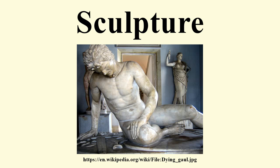Casting is a group of manufacturing processes by which a liquid material is poured into a mould, which contains a hollow cavity of the desired shape, and then allowed to solidify. The solid casting is then ejected or broken out to complete the process, although a final stage of cold work may follow on the finished cast. Casting may be used to form hot liquid metals or various materials that cold set after mixing of components. Casting is most often used for making complex shapes that would otherwise be difficult or uneconomical to make by other methods. The oldest surviving casting is a copper Mesopotamian frog from 3200 BC. Specific techniques include lost wax casting, plaster mould casting and sand casting.